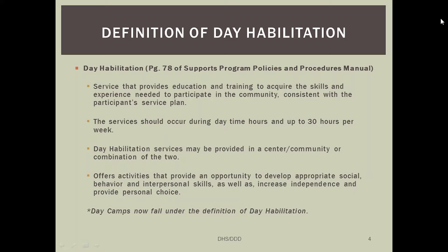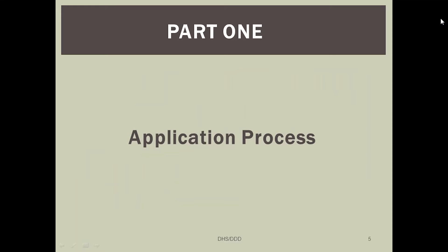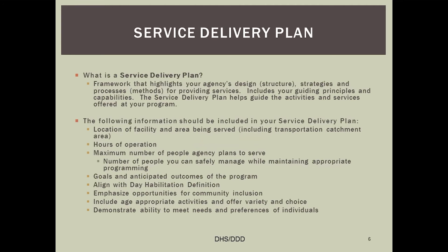At this point, I am going to turn the presentation over to Tashia Frazier. She is going to discuss further the application process and some of the issues that we have been finding. I am Tashia Frazier, a quality assurance specialist who reviews applications for the northern region, and I will be discussing part one, which is the application — essentially the paperwork. The first component of the application that we look for is your service delivery plan.